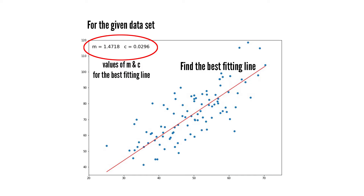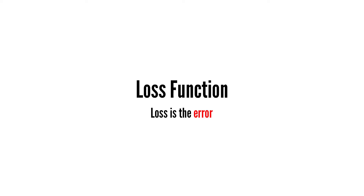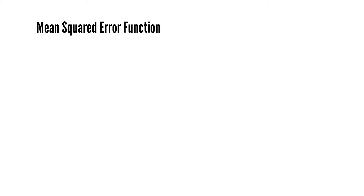To find the best fitting line, we'll need to measure the error in some way. We'll be using the loss function to do this. The loss is the error in our predicted values of m and c. Our goal is to minimize this error and obtain the most accurate values of m and c. Today we'll use the mean squared error function to calculate the loss.